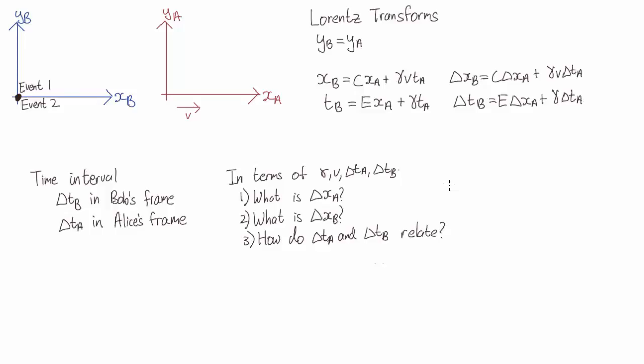Now the second event happens behind her. So delta xa is x2 minus x1, which will give us minus v delta ta.